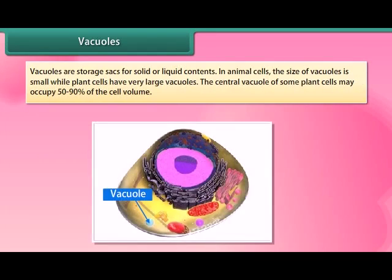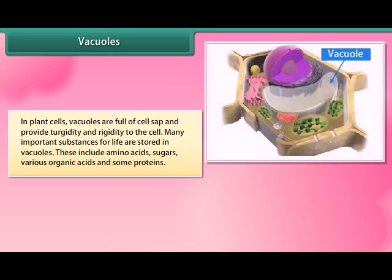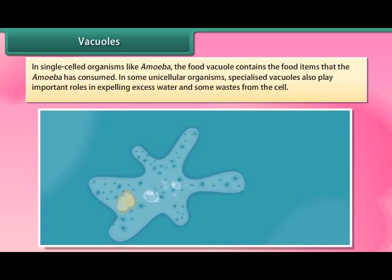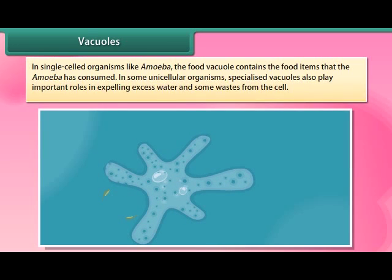Vacuoles are storage sacs for solid or liquid contents. In animal cells the size of vacuoles is small, while plant cells have very large vacuoles. The central vacuole of some plant cells may occupy 50 to 90 percent of the cell volume. In plant cells, vacuoles are full of cell sap and provide turgidity and rigidity to the cell. Many important substances are stored in vacuoles, including amino acids, sugars, various organic acids, and some proteins. In single-celled organisms like Amoeba, the food vacuole contains consumed food items. In some unicellular organisms, specialized vacuoles also expel excess water and waste from the cell.